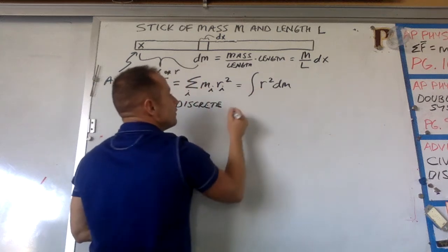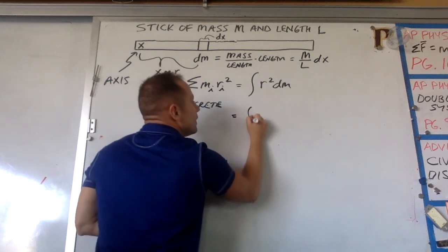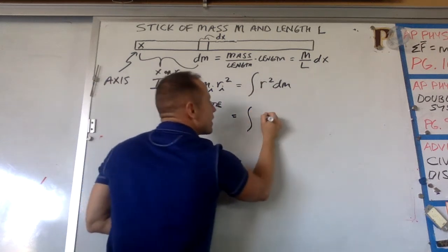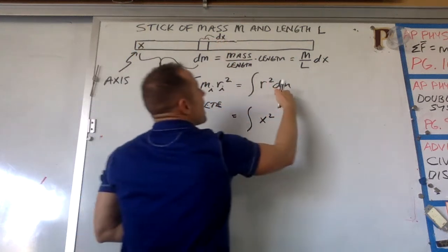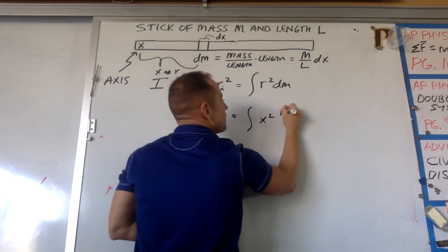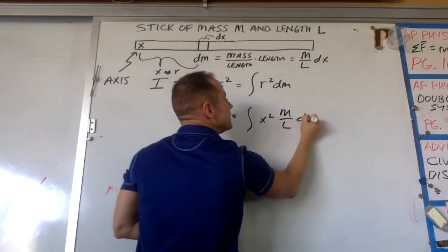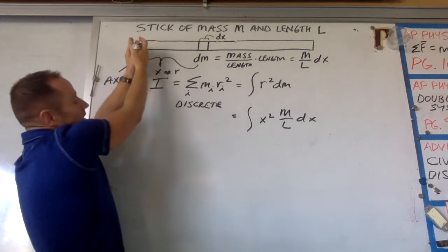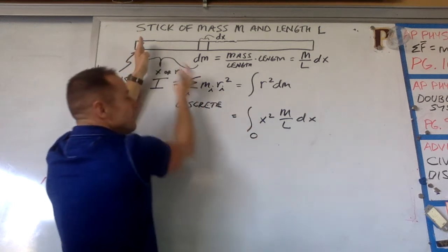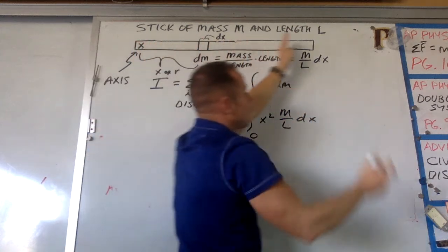So let's substitute for both of these things. The r squared is actually x squared, x representing how far away you are. And then dm, let's plug in our expression for dm, M over L dx. And what we have to do is start at the left end of the stick at zero and let x run all the way out to L.